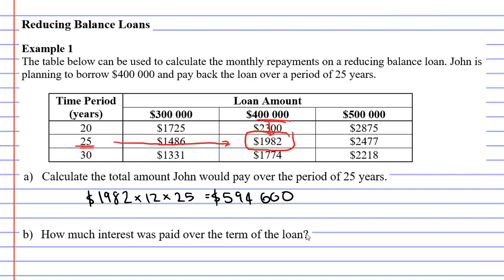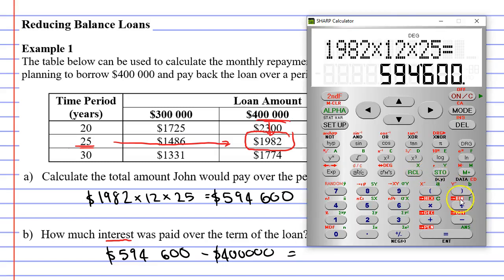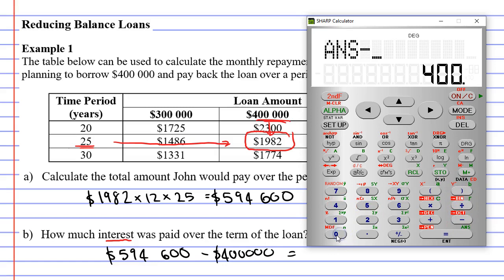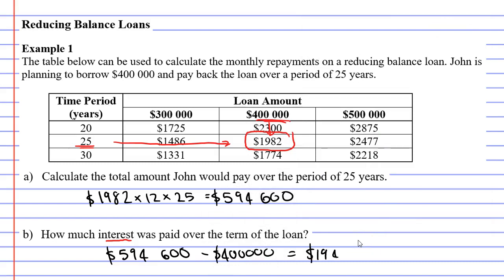Moving on to question B: how much interest was paid over the term of the loan? Whenever you see the word interest, what they mean is how much extra money did you pay — how much money did the bank make from you? He paid $594,600 to the bank and he borrowed $400,000. By subtracting these numbers, we can see how much extra he paid: $594,600 minus $400,000 equals $194,600. That is the interest, or the amount the bank profited by lending John this money.